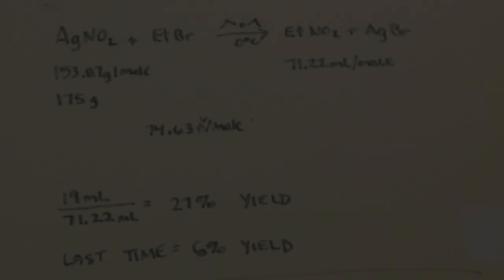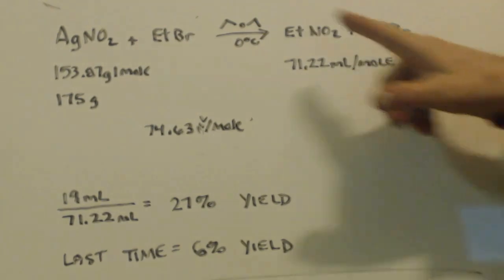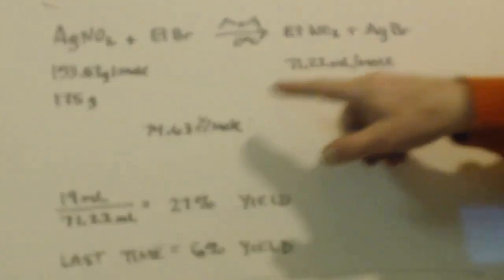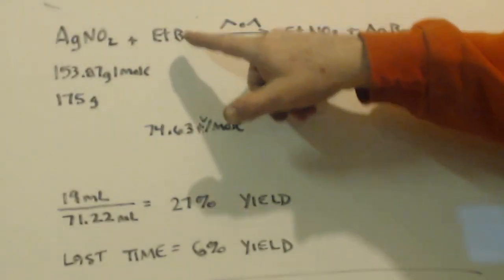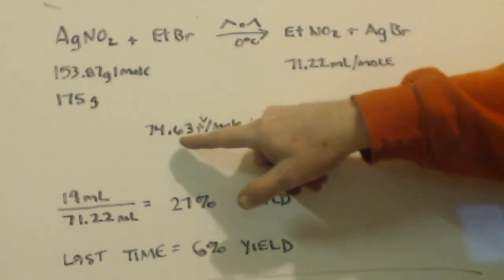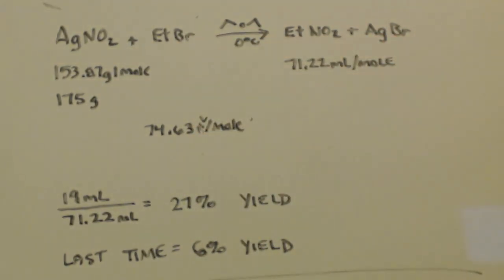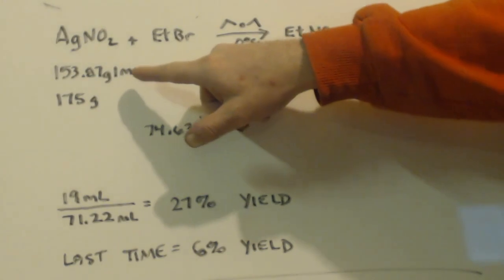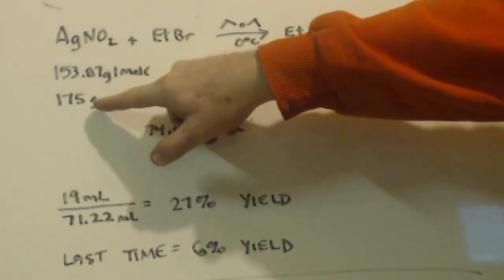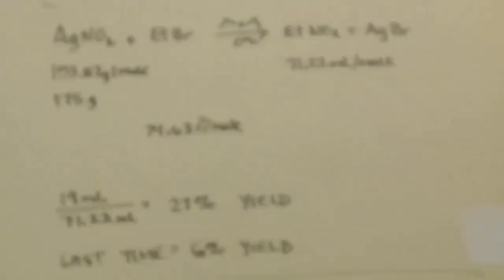Okay, so here's the equation, your molar masses, molar volumes that goes for that. Now the ethyl bromide I used one mole which is 74 mils or 75 mils. Whenever I used the silver nitrate, I used 175 grams instead of 154 because I wanted to have a little bit of excess.